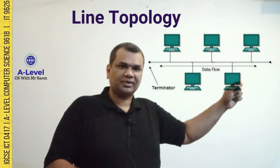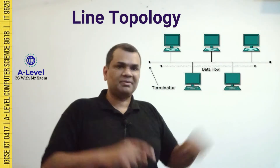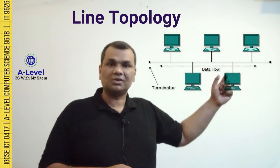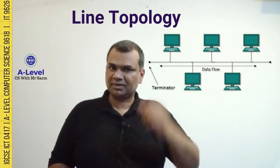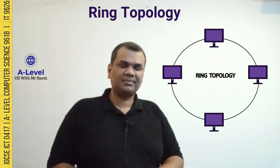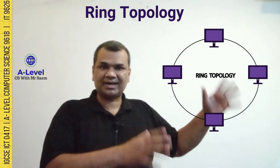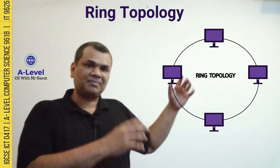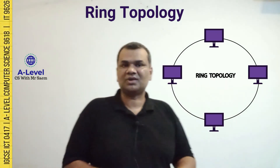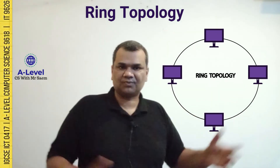If you connect both terminators — the end nodes — together, it becomes a circle, or as you may say, a ring topology. A ring topology is again for a very small environment, not for a large environment, with no central server. You can attach different peripheral devices such as cameras and scanners.